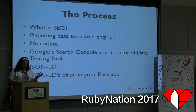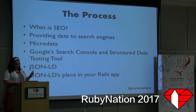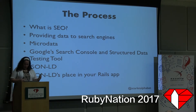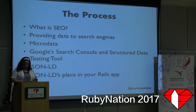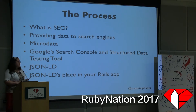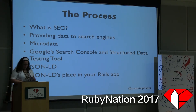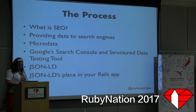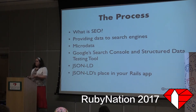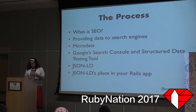We'll start by taking a look at what SEO means in a general sense. We'll then dive into why providing good structured data to search engines is important for page rankings. There are two forms of structured data that we'll take a look at: microdata and JSON-LD. We'll explore two tools that Google provides to aid you in your quest — Google's Search Console and the Structured Data Testing Tool. Finally, we'll arrive at the importance of JSON-LD in your Rails app. This process echoes my own path as I explored what type of structured data would best improve our search results.